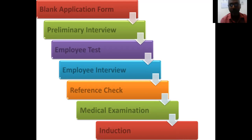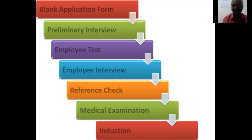Regarding the application form — once candidates apply via resume, when they come for the interview they are given an application form to complete. This captures demographic details such as name, age, date of birth, identification number, address, educational qualifications, professional body memberships, work experience, reason for leaving the previous job, expected salary, scope of previous jobs, and contact details.